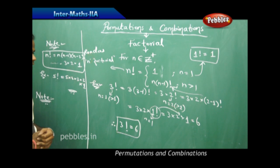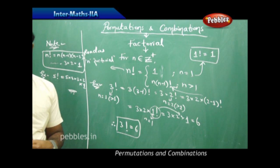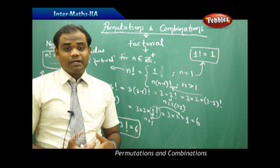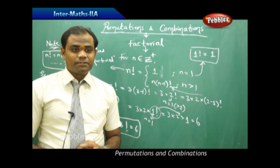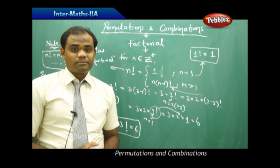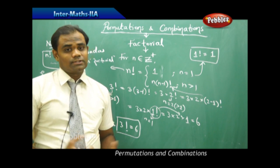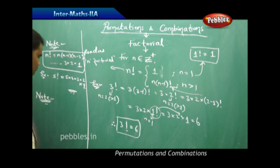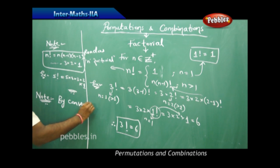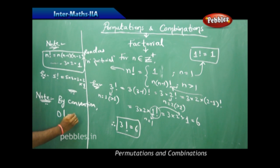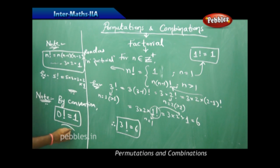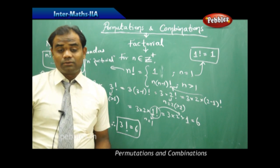It is very important to understand 0 factorial, because there are debates among mathematics researchers about whether 0 factorial equals 1. By convention, we conclude that 0 factorial is assumed to be 1 until it is disproved. So we assume by convention that 0 factorial equals 1.